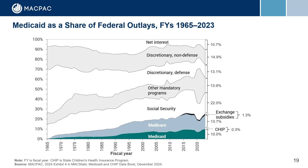In this graph, spending for health programs is compared with spending for other components of the federal budget for FY1965 through 2023. The share of the federal budget devoted to Medicaid and Medicare has grown steadily since the programs were enacted in 1965, and Medicaid spending continues to account for a smaller share of the federal budget than Medicare. In fiscal year 2023, the share of federal spending on Medicaid increased from the prior fiscal year, reflecting greater enrollment from the Families First Coronavirus Response Act provisions, as well as a decrease in other federal spending related to pandemic relief.